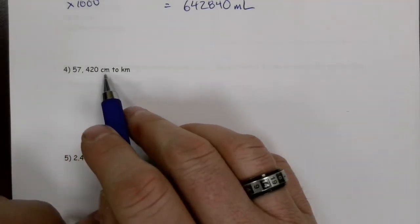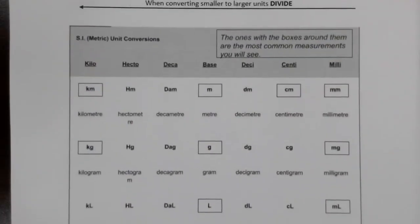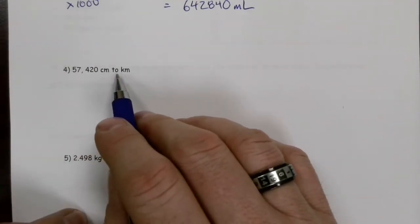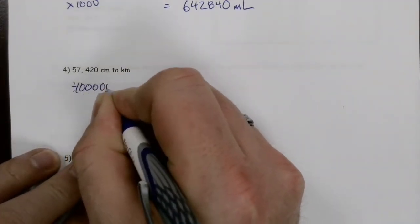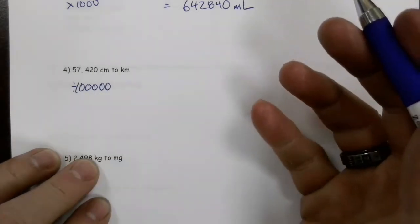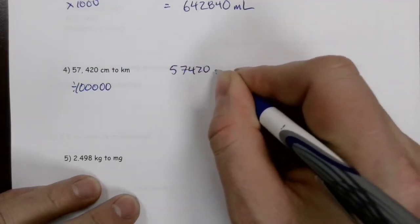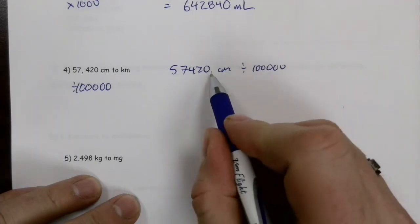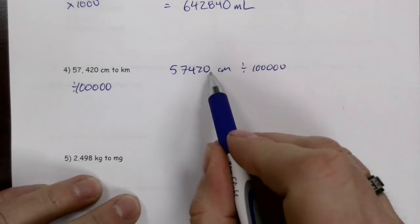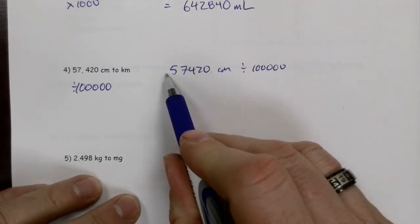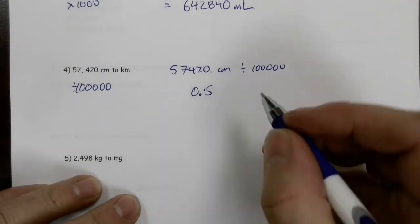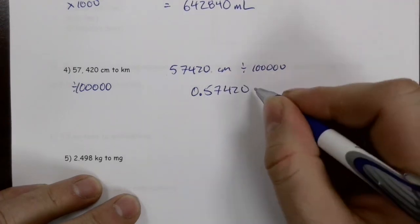Now: 57,420 centimeters to kilometers. Centimeters to kilometers is five steps, so we divide by 100,000. Since we're going from a small unit to a large unit, the number must get smaller. The decimal on 57,420 is at the end; moving it five places to the left — one, two, three, four, five — puts it in front of the five. With a leading zero, that gives us 0.57420 kilometers.